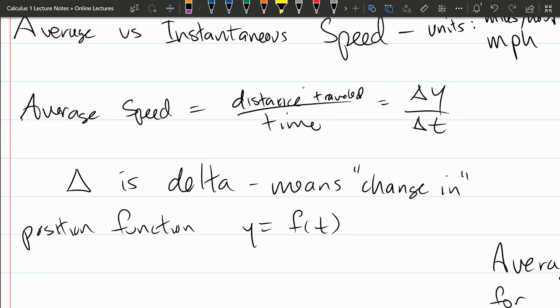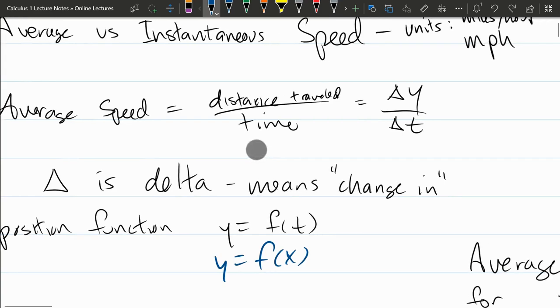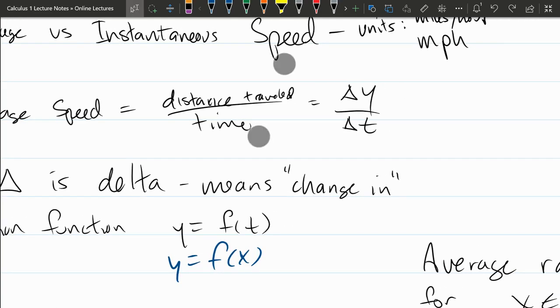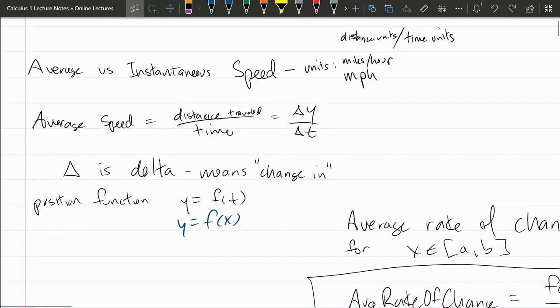A lot of times you're going to see the x variable down here. Depending on the problem, x or t will be your independent or your input variable. Now if we have a position function that is y equals f of t, of course this could be y equals f of x. x and t kind of play the same role. The reason we use t quite a bit in calculus is because it refers to time.